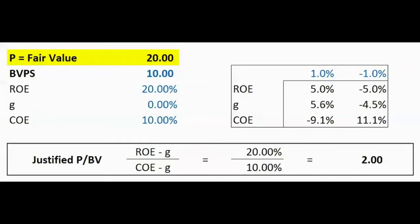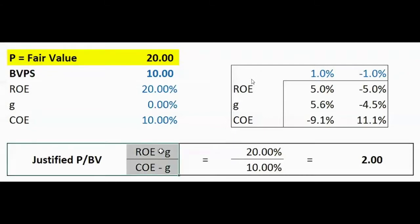Welcome back everyone. Today we'll talk once again about price-to-book value — how we can value banks using the fundamentals of that bank. This is the justified price-to-book value model, also known as the ROE model or the warranted equity valuation model. Let's go through an example of how we can value a bank.